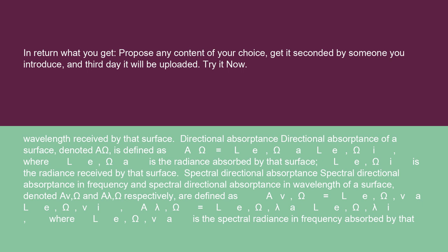Directional absorptance of a surface, denoted Aω, is defined as Aω = LEωa / LEωi, where LEωa is the radiance absorbed by that surface and LEωi is the radiance received by that surface.